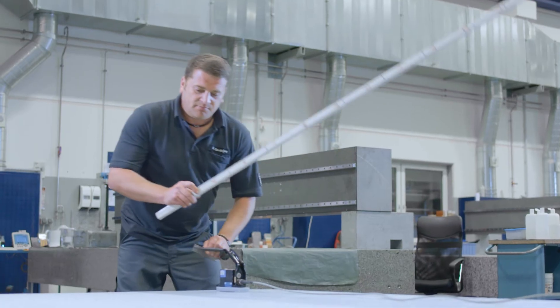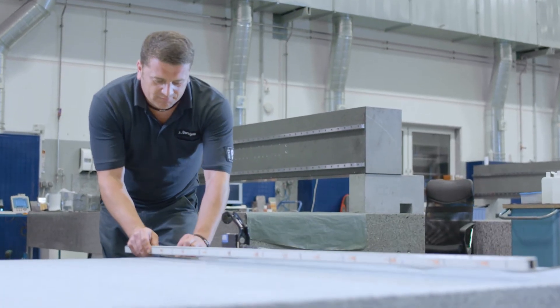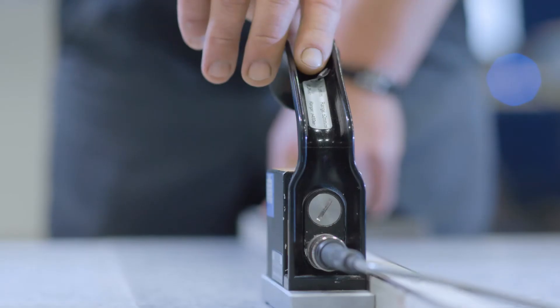Reitz and Bosch Rexroth have been partners for years in the production of circuit board drilling machines for producing smartphones. Reitz produces 650 machine beds per year as pre-mounted assemblies for us.